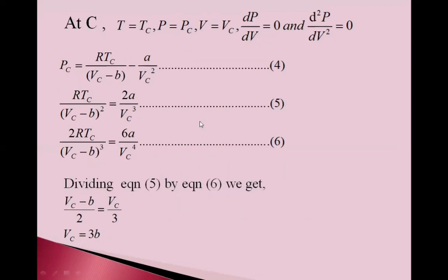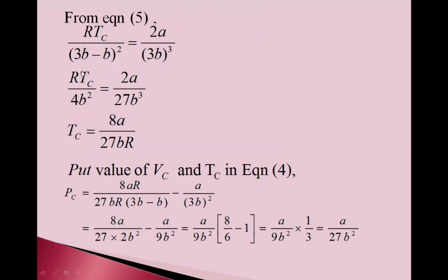From equation 5, put value of Vc here. So, RTc upon 3b minus b square is equal to 2a upon 3b cube. RTc upon 4b square is equal to 2a upon 27b cube. So, Tc is equal to 8a upon 27bR.